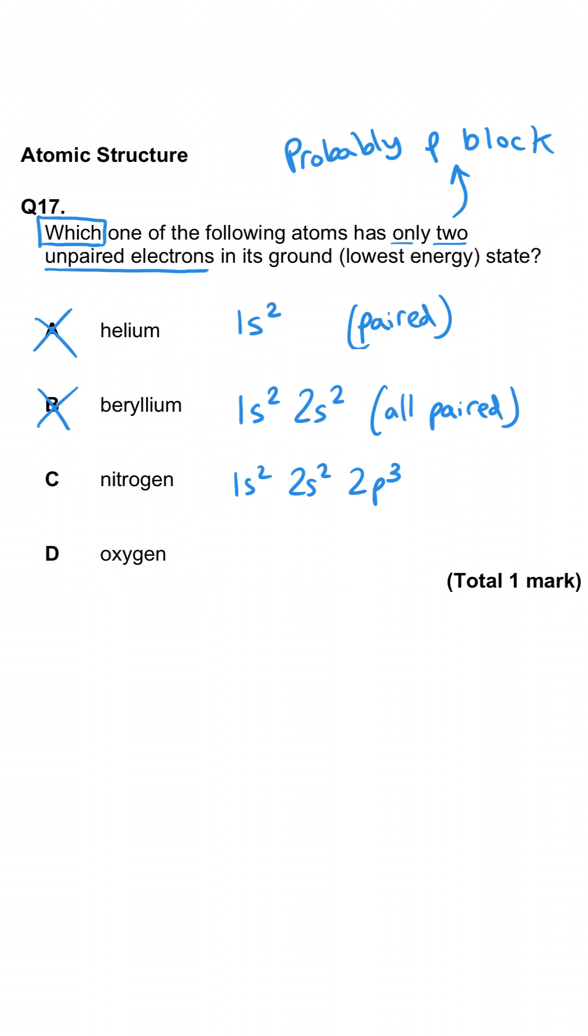Nitrogen and oxygen, they're in the P block, so these are our likely candidates. Nitrogen, with its seven electrons, finishes at 2p3. That means all three of those P electrons will go into separate orbitals because they go in separately before pairing up, whereas oxygen has got four P orbital electrons, so there'll be two doubly occupying the first orbital, and then the next two will be single occupancy. So oxygen is the correct answer. It's got two unpaired electrons in its ground state.